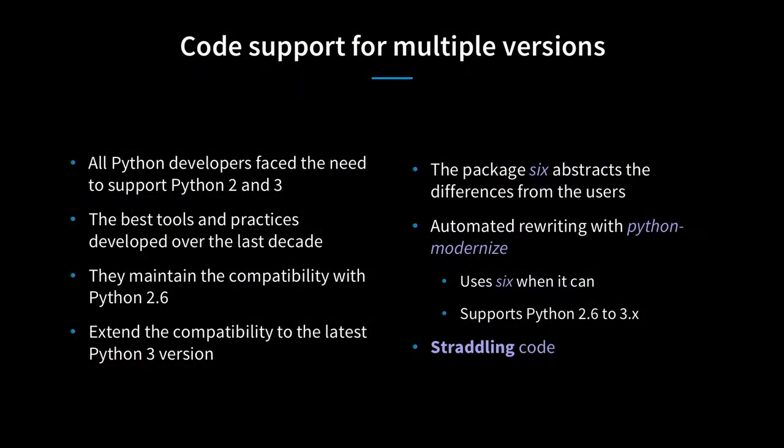You can't force all of those people to switch immediately to one version, so your libraries have to support multiple versions. But over the last decade, lots of tooling has been developed that handles that translation automatically—with a couple of gotchas you have to manually tune. After that, you have so-called straddling code. Guido van Rossum used that term—it's a bridge between the two worlds, and it uses the `six` package.